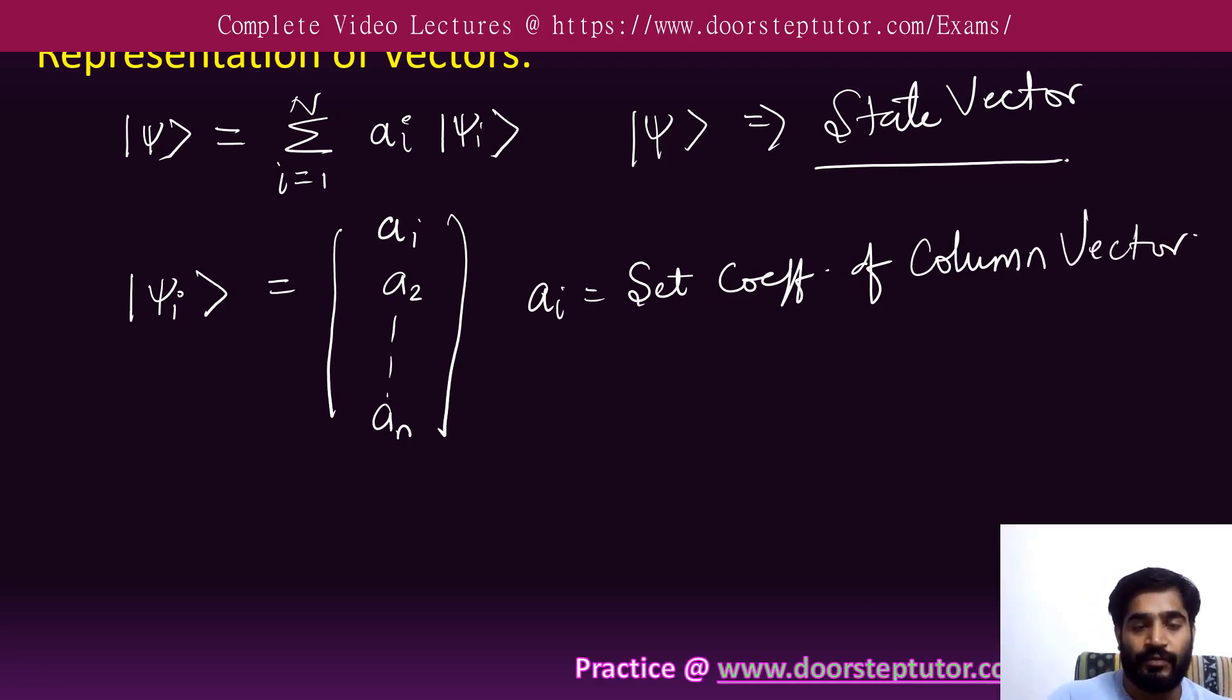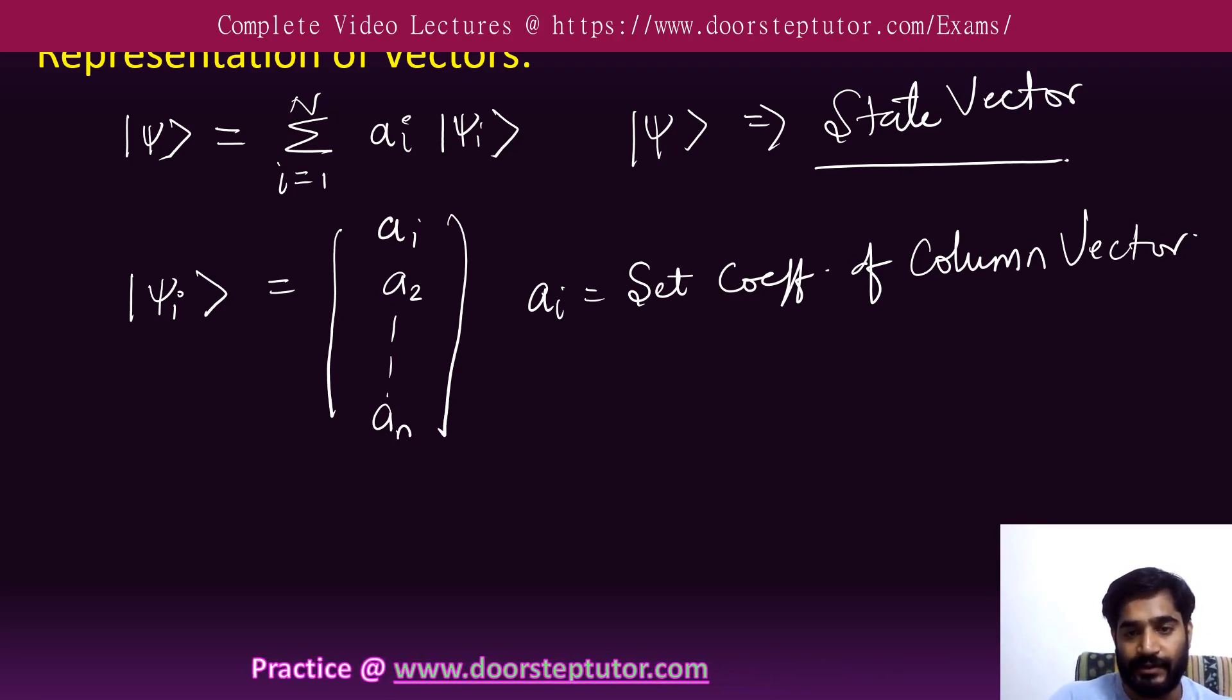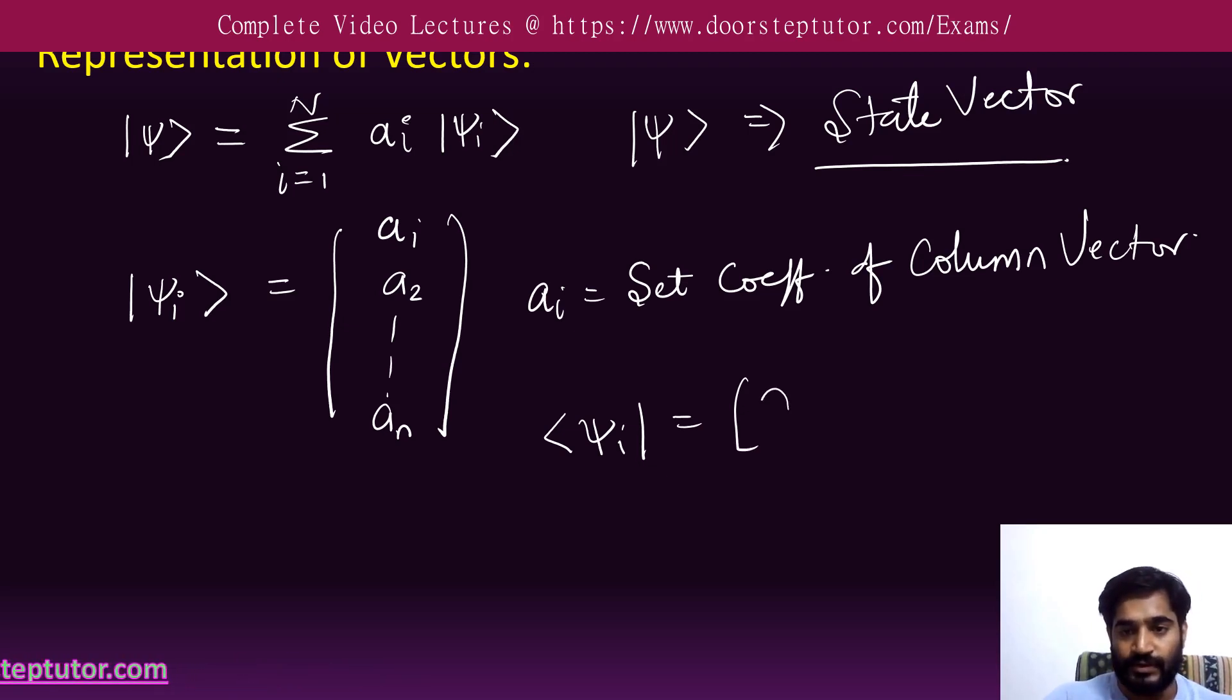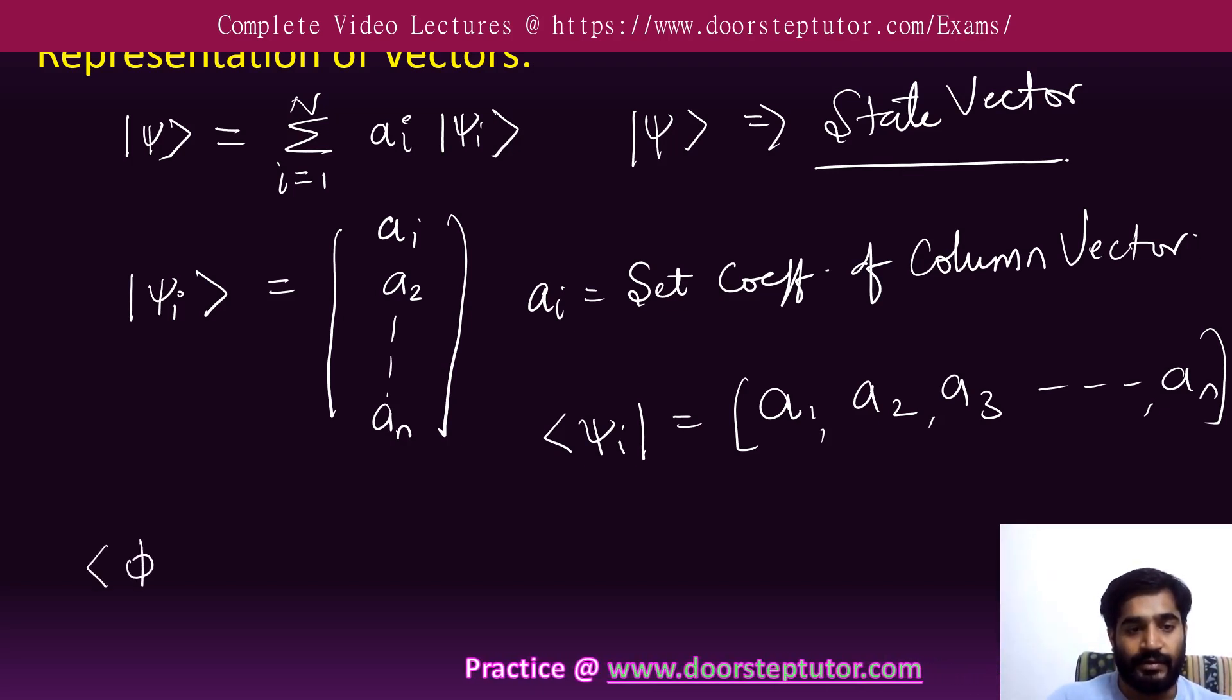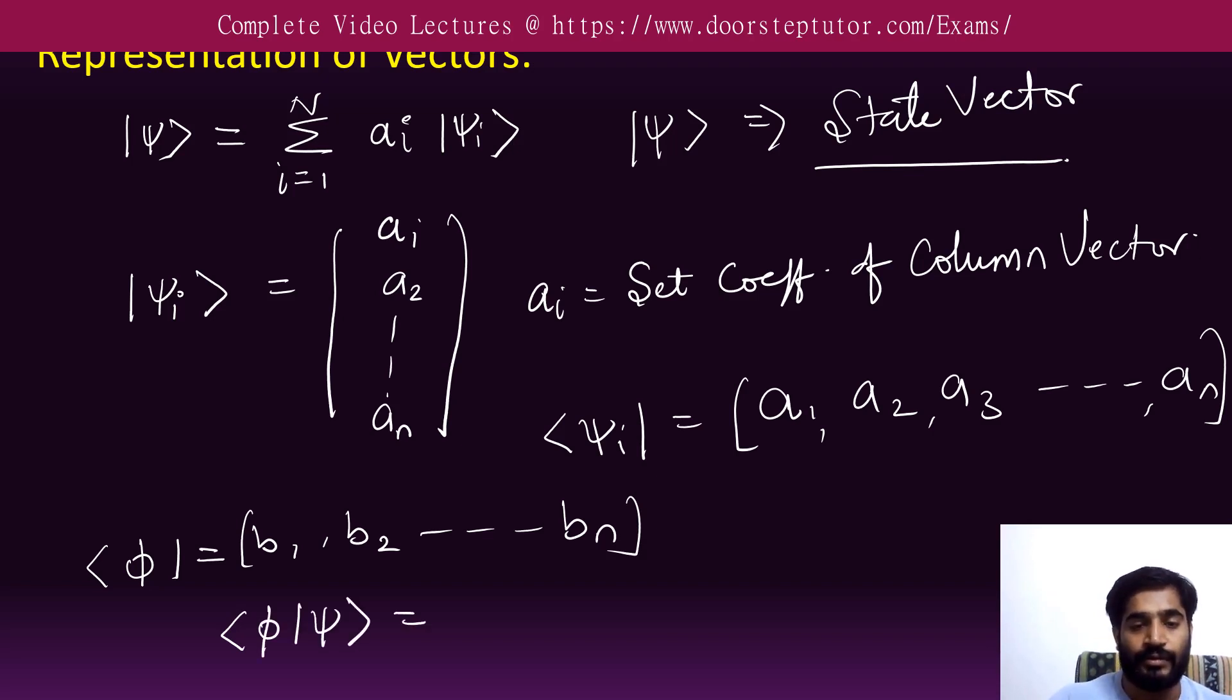If you want to find the bra of psi, the bra of psi will be a row, so it's a1, a2, a3 up to am. This is the difference between the ket of psi and bra of psi. Now if I want to find psi bra, suppose this is b1, b2 up to bm.